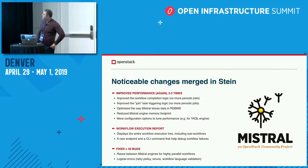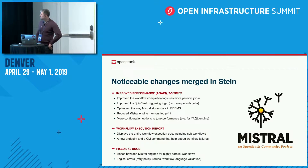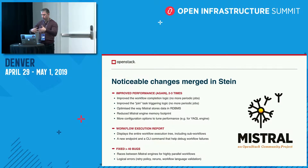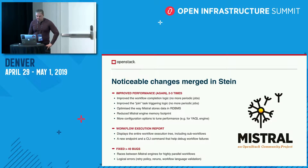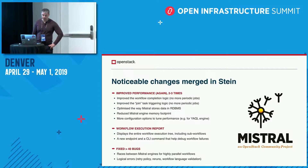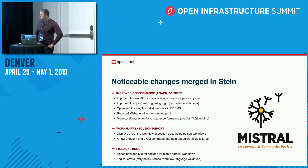If you're familiar with Mistral's workflow language, we specifically improved the join mechanism significantly. That's when you have multiple branches in the workflow and want to synchronize them at some point — you use the mechanism called join. We also improved the workflow completion logic, because it was based on periodic scheduled jobs, and there were some pretty bad consequences from that architectural decision.